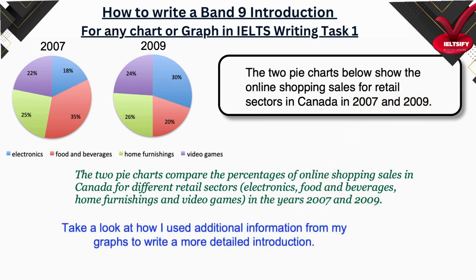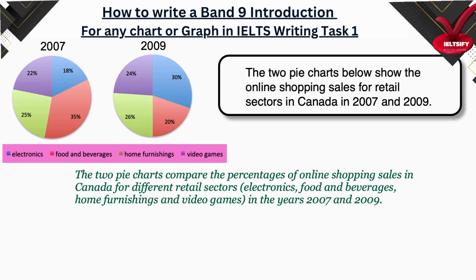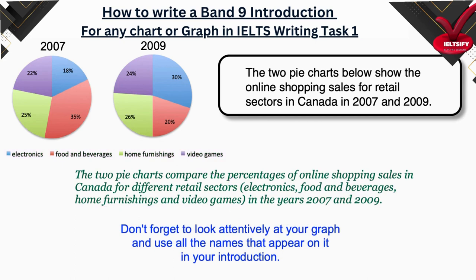Also, take a look at how I used additional information from my graphs to write a more detailed introduction. As you can see, we are given the names of retail sectors in our pie charts: electronics, food and beverages, home furnishings, and video games. I put all those names into parentheses and plugged them into my introduction right after mentioning retail sectors. So don't forget to look attentively at your graph and use all the names that appear on it in your introduction.